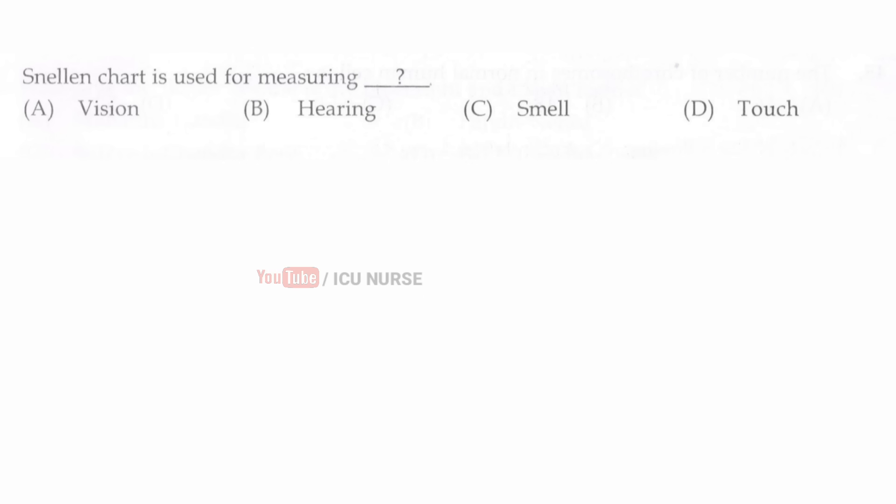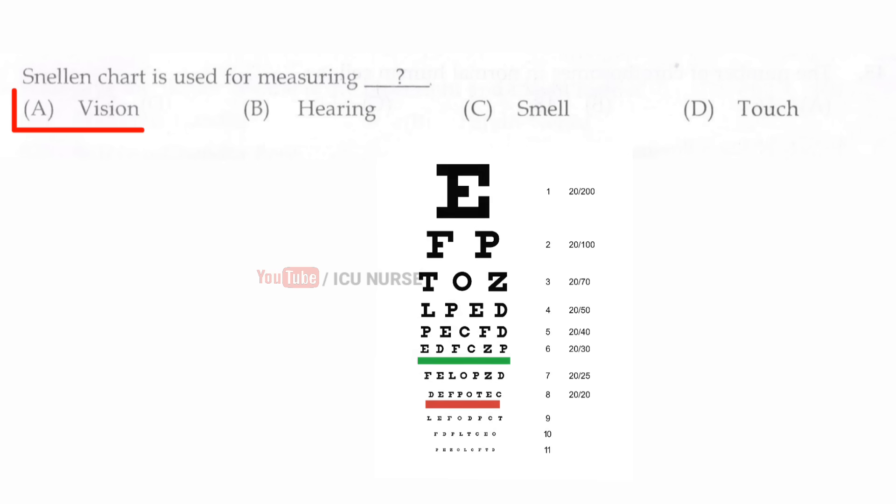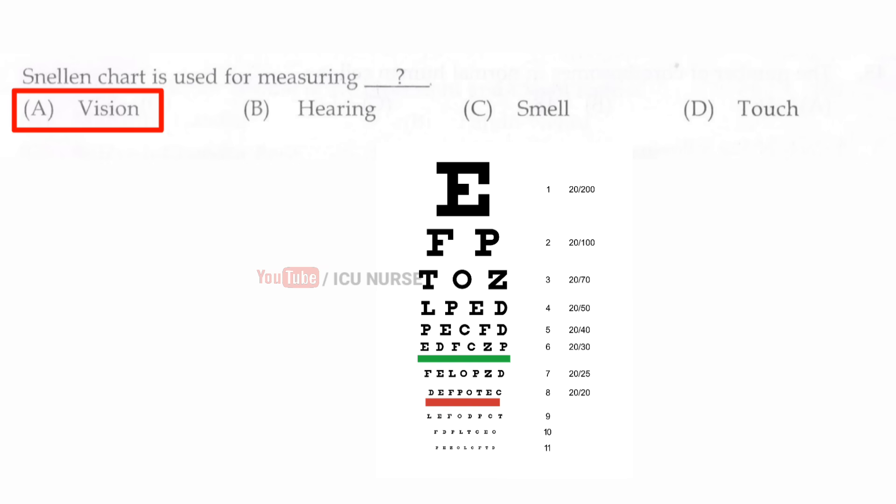Snellen chart is used for measuring — the correct answer is A — vision. Snellen chart is used for measuring vision.